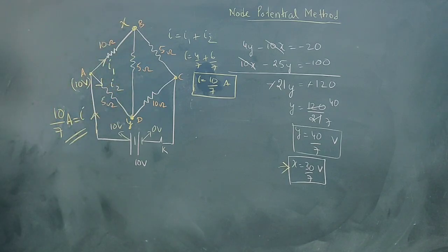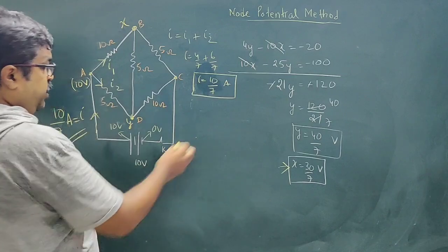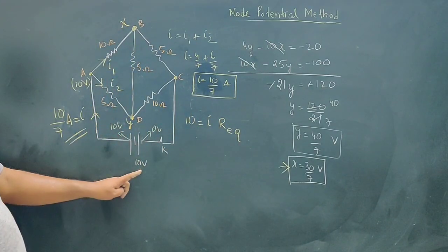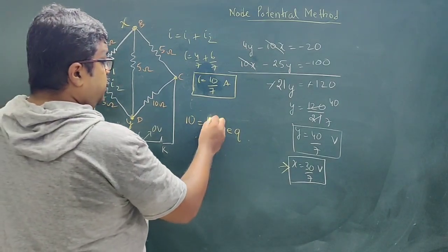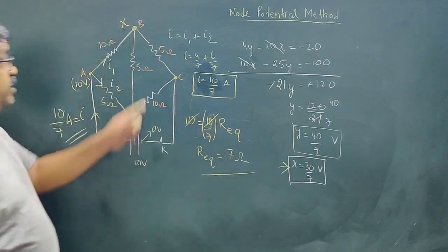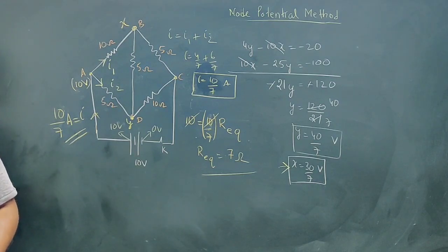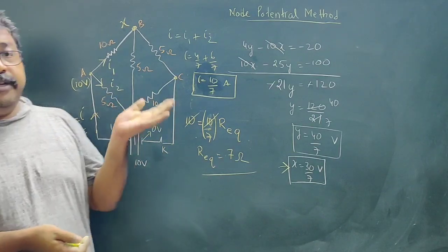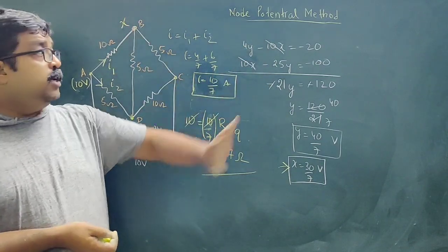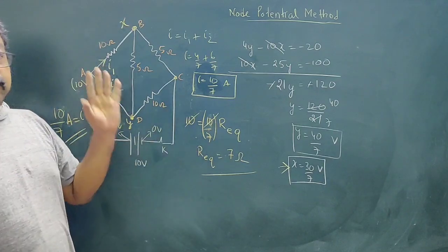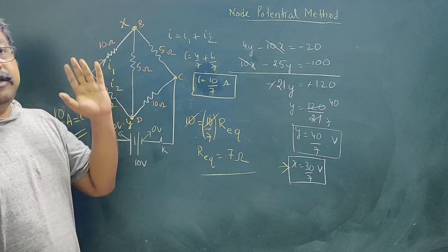Now for the equivalent resistance: voltage equals 10 V, current is 10/7 ampere. Using V equals IR, 10 equals (10/7) times R equivalent. The 10s cancel, giving R equivalent equals 7 ohm. So the resistance of this circuit is 7 ohm. This is how we can solve this circuit without using Kirchhoff's rule. In NCERT and board exams, Kirchhoff's rule is expected, but in entrance exams the node potential method can also be used to solve such circuits.